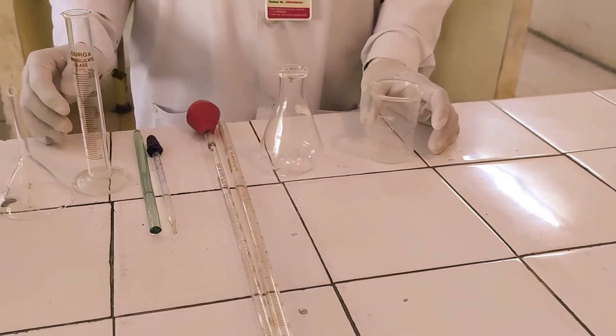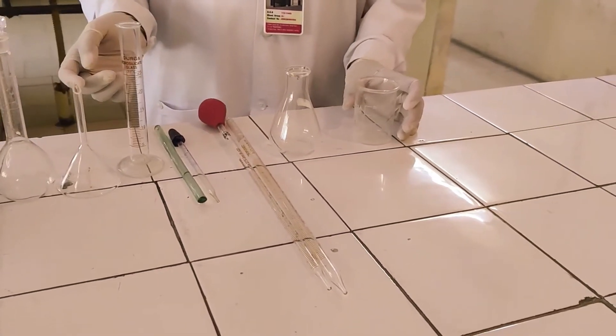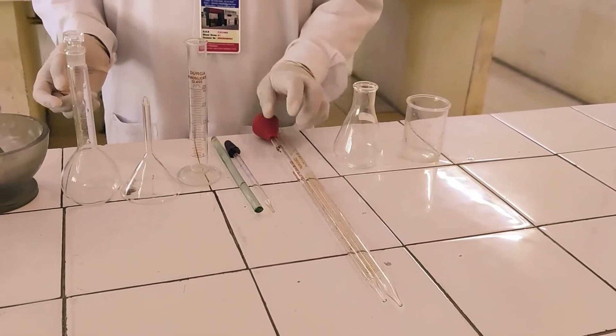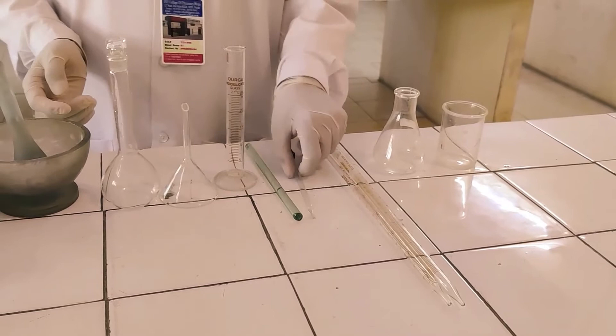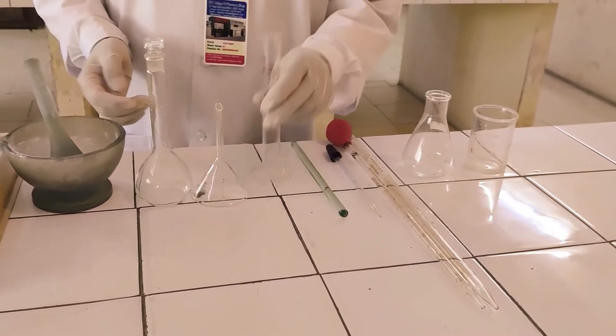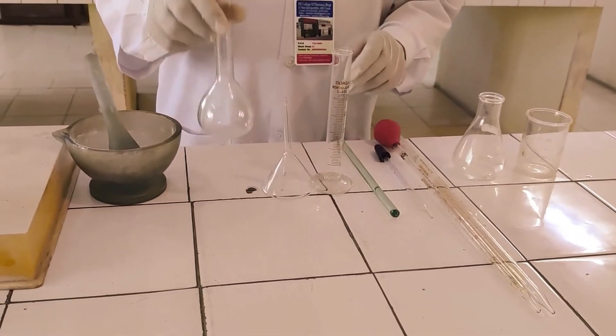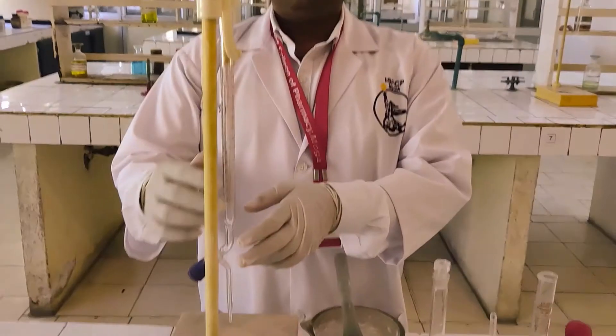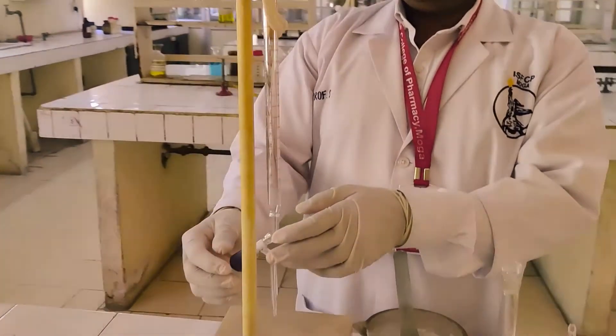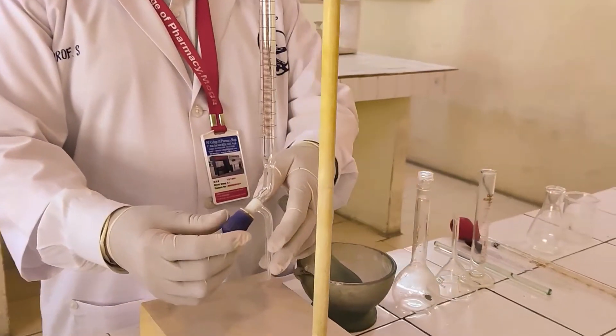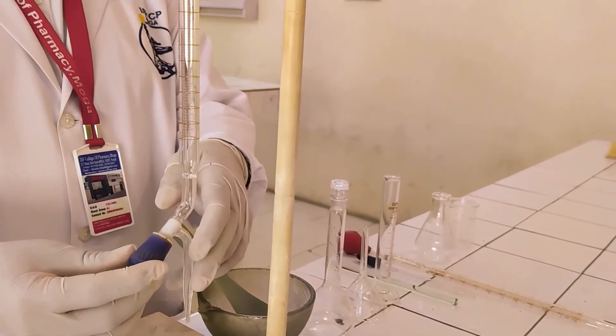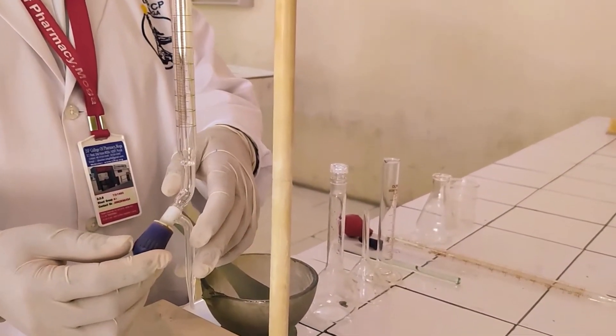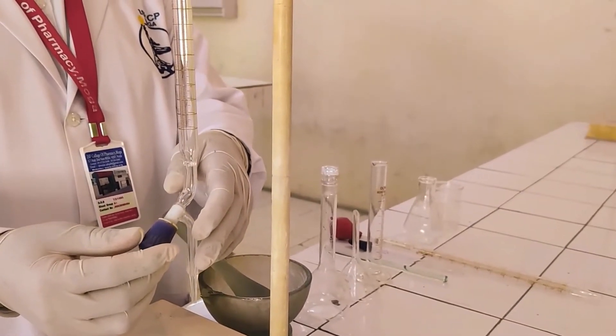For the assay of aspirin you will need following glasswares: beaker, conical flask, pipette, dropper, glass rod, measuring cylinder, funnel, volumetric flask, mortar pestle and burette and burette stand. You can see this knob, this knob is made up of PTFE, polytetrafluoroethylene. Why polytetrafluoroethylene? Because it need not to lubricate.